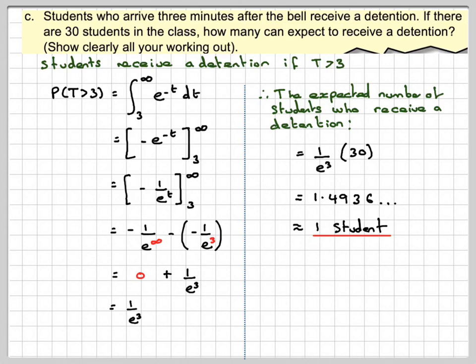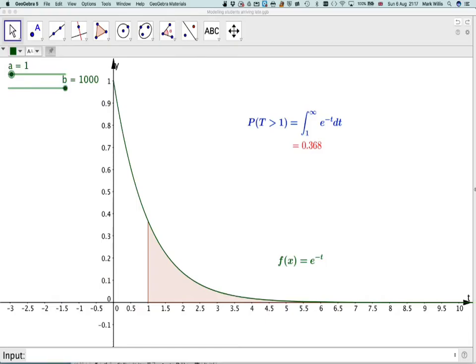And again, if we go to the GeoGebra applet and then set this one now to be 3, we can see we get a very low probability, 0.05. And if we multiply that by 30, we'll probably get approximately one student again. That's the probability of the area there.